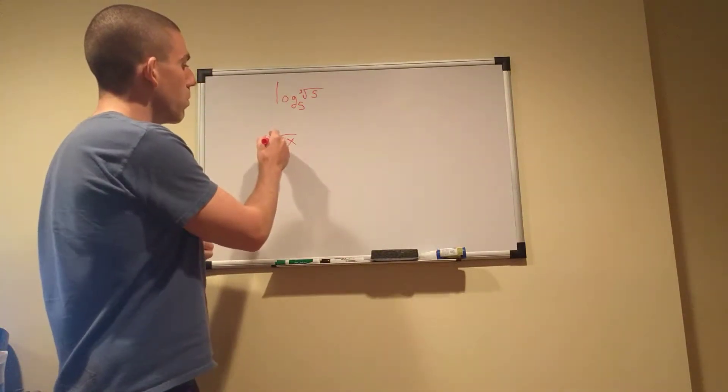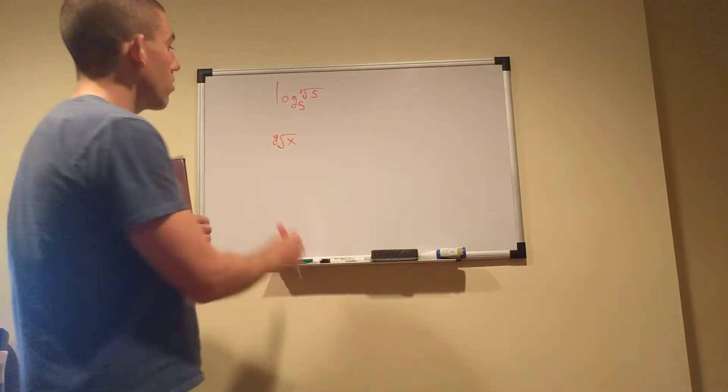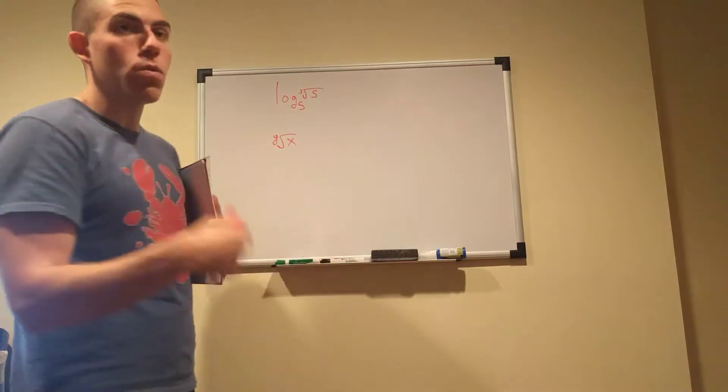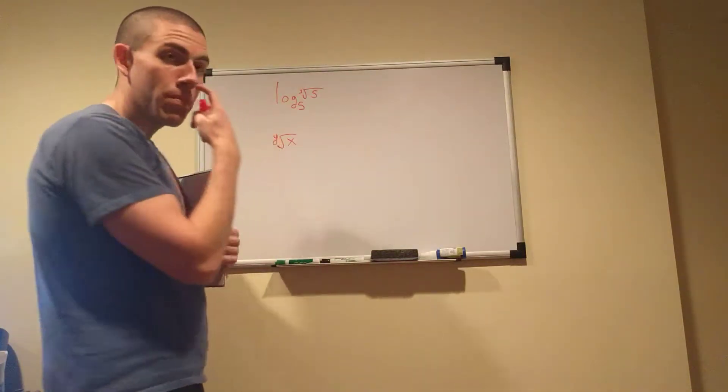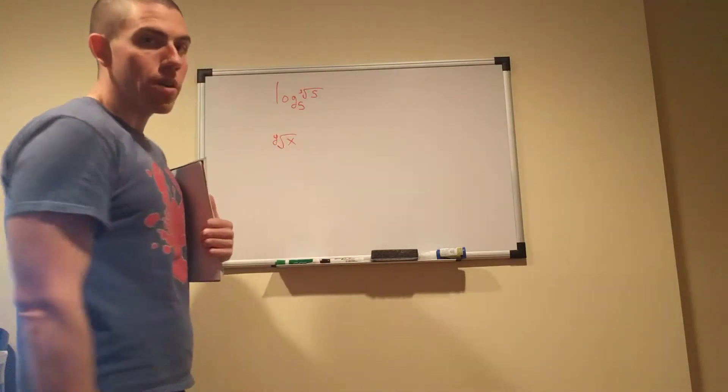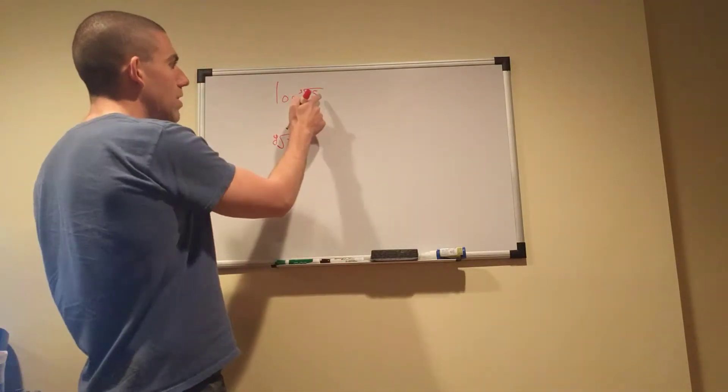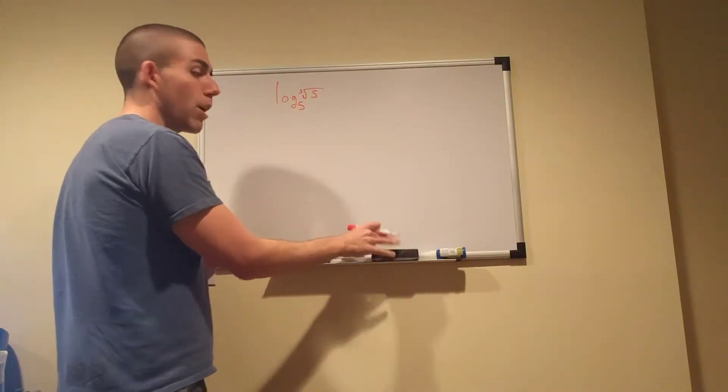So what's actually missing here is a y, right there. There should be a y here telling you how many times we want to multiply something by itself in order to get this number. What root is it, basically? So this is the yth root of x. So this is asking for the cube root of 5. It's asking for, by the way, as an example...